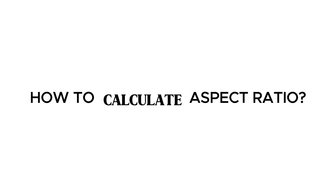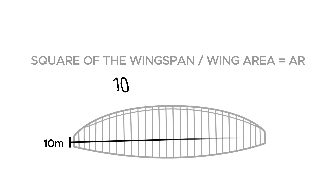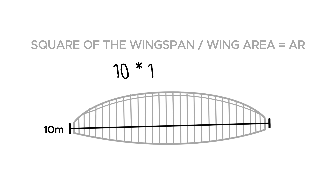To calculate the aspect ratio, you divide the square of the wingspan by the wing area. For example, if the wingspan is 10 metres and the wing area is 25 square metres, then the aspect ratio is 4.